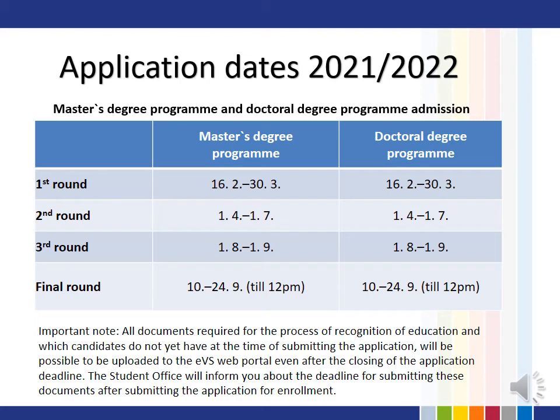The first application deadline for applying to postgraduate study programs of the 2nd and 3rd level opens on February 16th and ends on March 30th. It is no longer possible to change the study program after the closing of the application deadline. IMPORTANT NOTE: All documents required for the process of recognition of education which candidates do not yet have at the time of submitting the application will be possible to upload to the Evše web portal even after the closing of the application deadline. The Student Office will inform you about the deadline for submitting these documents after submitting the application for enrollment.